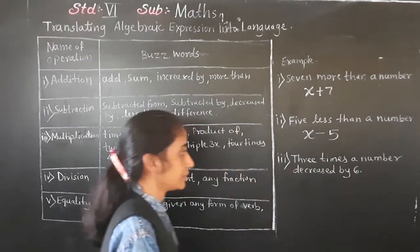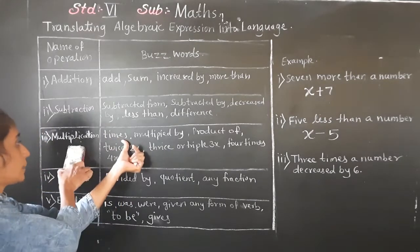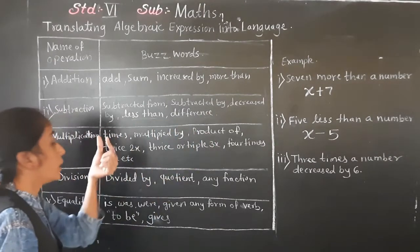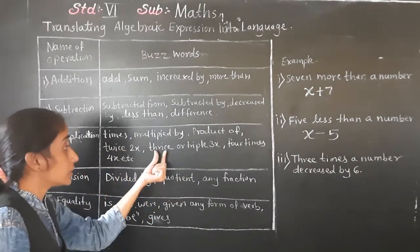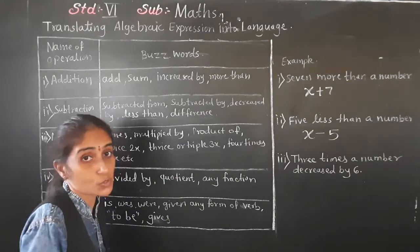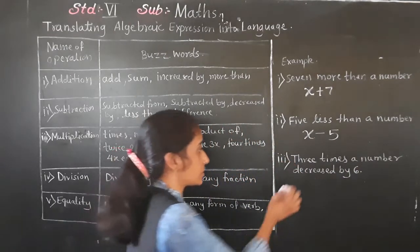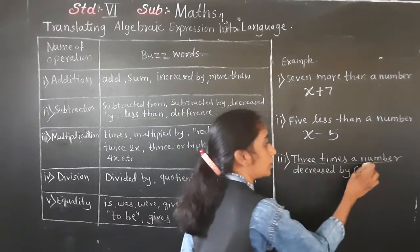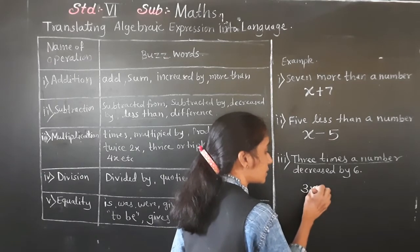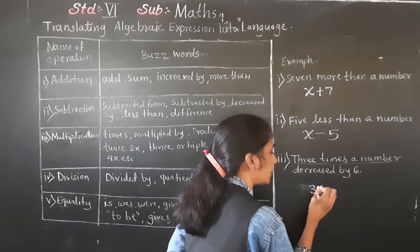Three times a number. 'Times' means multiplication. For multiplication, the words are: times, multiply by, product of, twice, thrice, triple, four times, five times. Three times a number — the number we don't know is x. So three times a number means 3 multiplied by x, which is 3x.